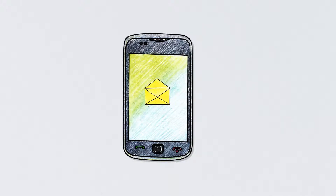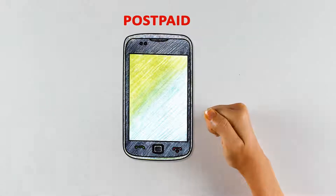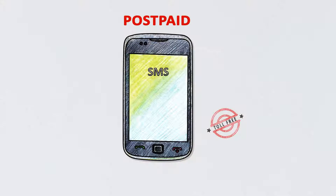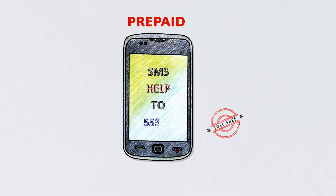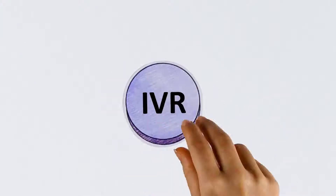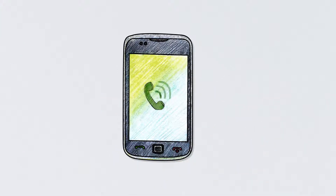Use the SMS option to get your account details instantly. To check top InstaCore postpaid SMS features, type HELP and send it to 55444. To check top InstaCore prepaid SMS features, type HELP and send it to 55333.